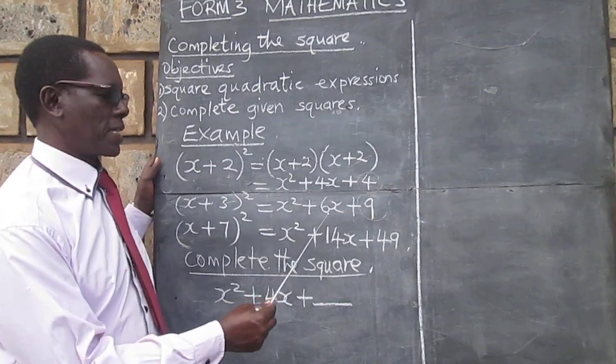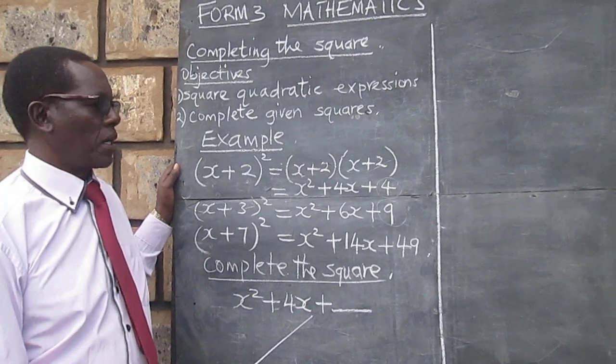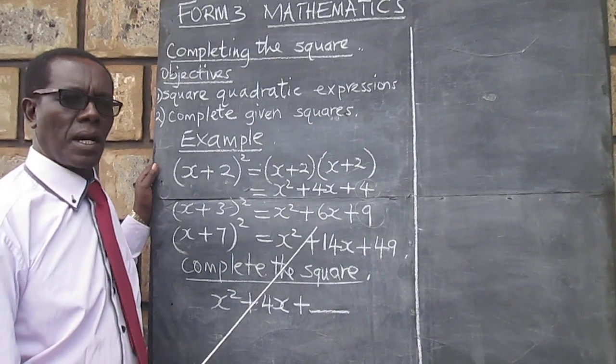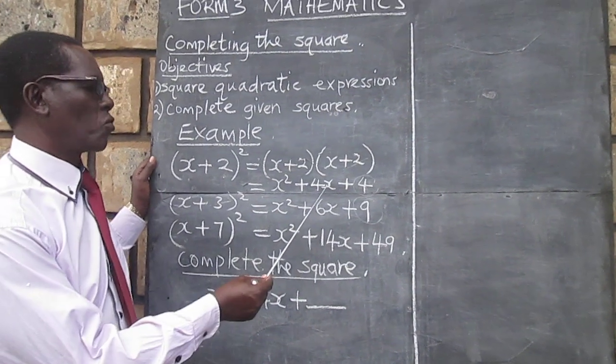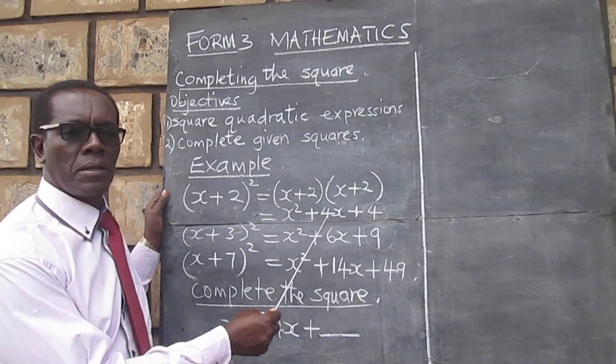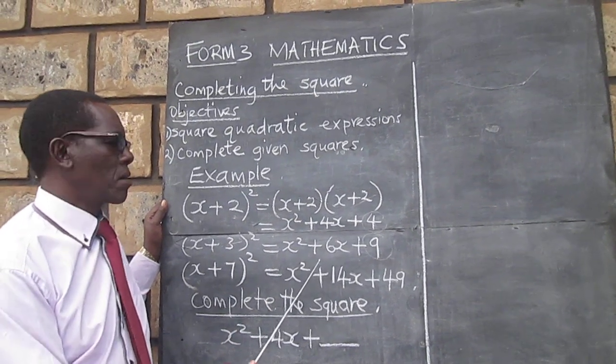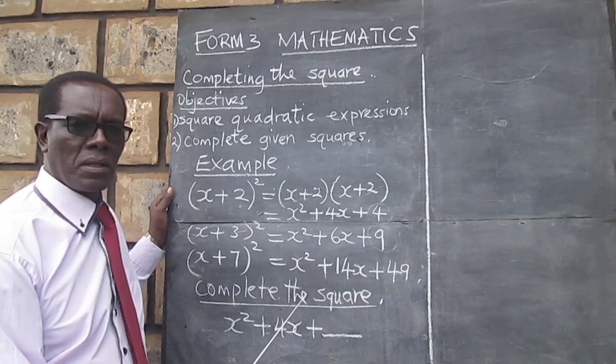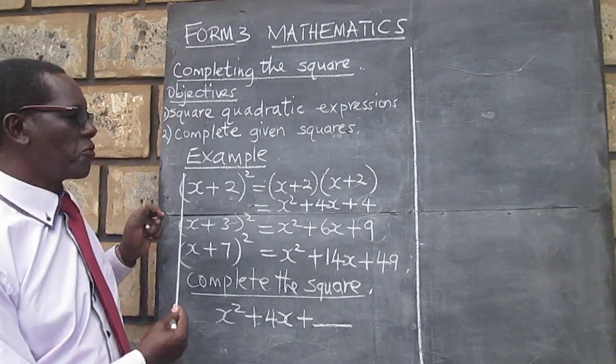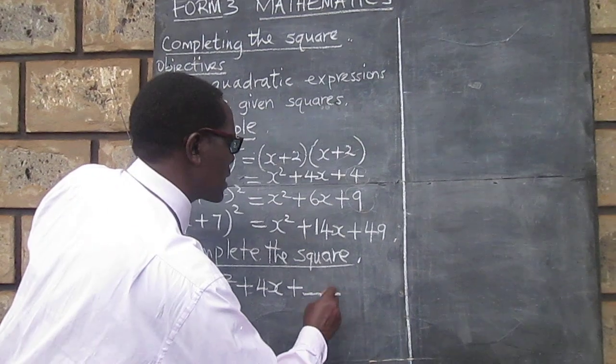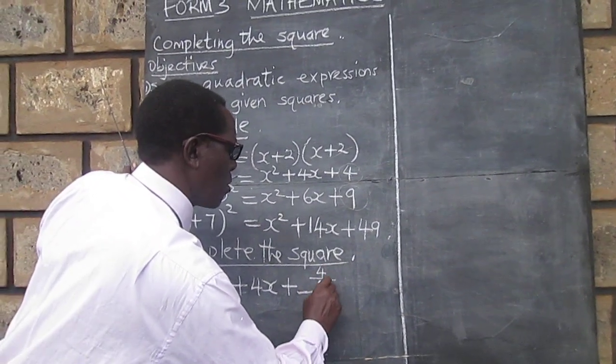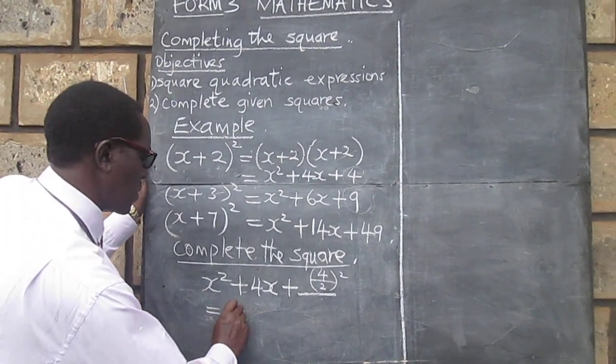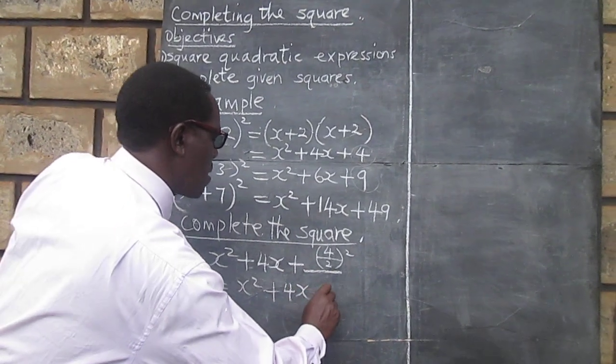Like I said, there is a pattern. If you look at this 4, the 4 can be obtained by adding a half of the coefficient of the middle term. You see, we have the first term, the middle term, and the last term. So, you will discover from here that if we added, for instance, here, 4 over 2 whole squared, we would get x squared plus 4x plus 4.